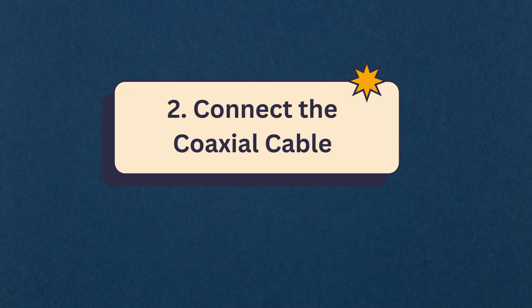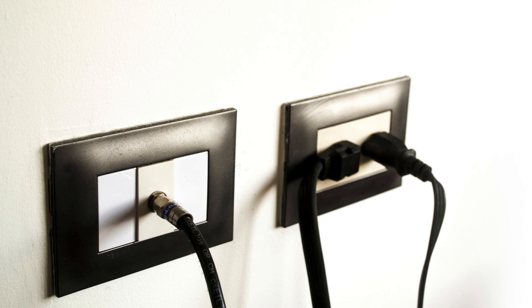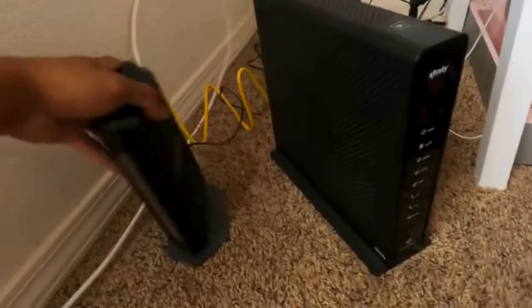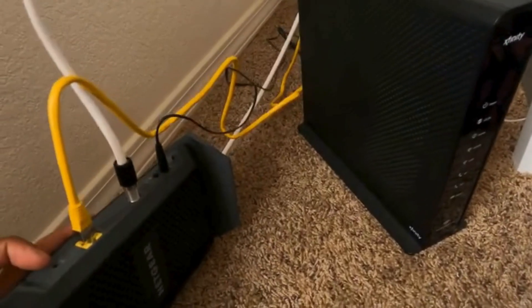Step 2: Connect the coaxial cable. Screw one end of the coaxial cable into your wall outlet and the other end into the coaxial port on the modem.